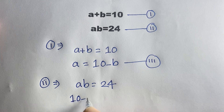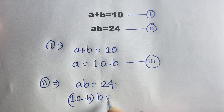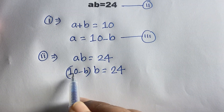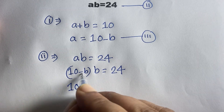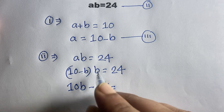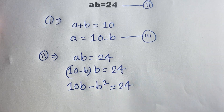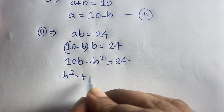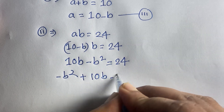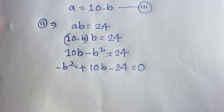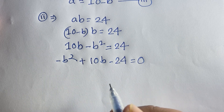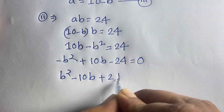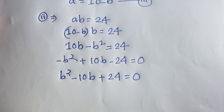Substituting, it will be (10 minus b) times b is equal to 24. Then we get 10b minus b squared is equal to 24. This equation becomes minus b squared plus 10b minus 24 is equal to 0. Now if I multiply both sides by minus 1, it will be b squared minus 10b plus 24 is equal to 0. This is a quadratic equation.